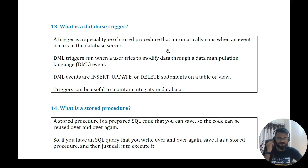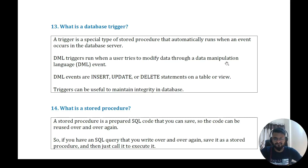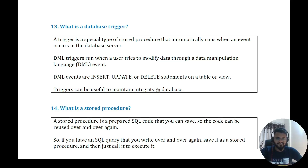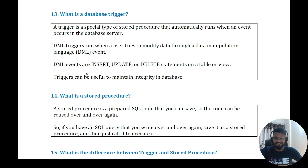Question twelve: what is a database trigger? A trigger is a special type of stored procedure that automatically runs when an event occurs in a database server. DML triggers run when a user tries to modify data through DML events — insert, update, or delete on a table or view. Triggers can be useful to maintain integrity in a database.